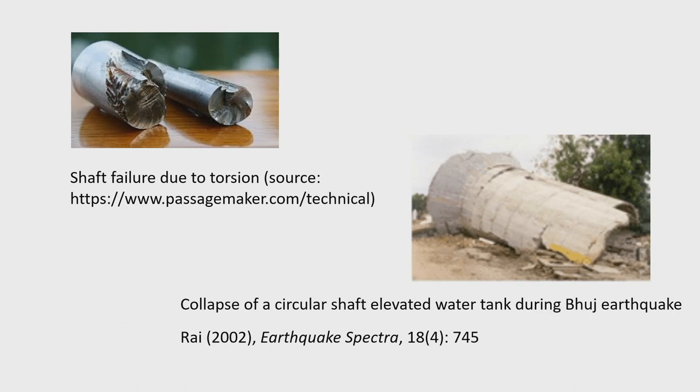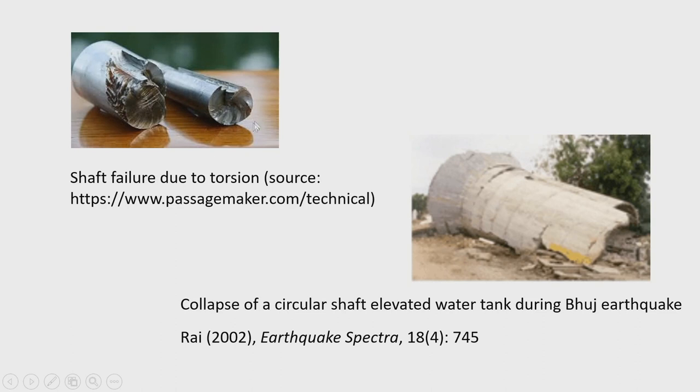Torsional modes are very common, and shaft failure occurs due to torsion because in machine components that are rotating, a twisting moment is applied. The member becomes stressed and the effect of torsion is to produce shear stress. If the shear stress is extremely high, failure may occur. In earthquakes, although motion is analyzed in three primary directions x, y, z, due to structural asymmetry there may also be a twisting component in the resulting motion.